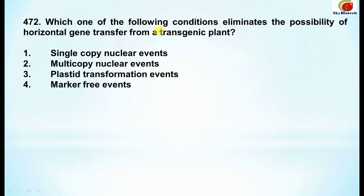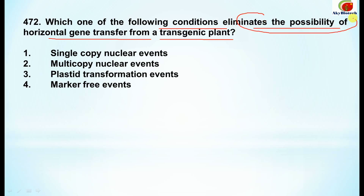Question 472: which one of the following conditions eliminates the possibility of horizontal gene transfer from a transgenic plant? You have four options, and out of these the correct option is option 3 — that is plastid transformation events.